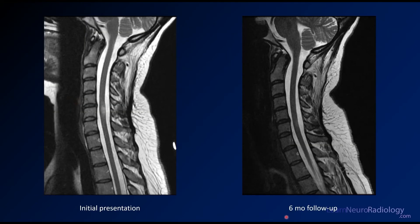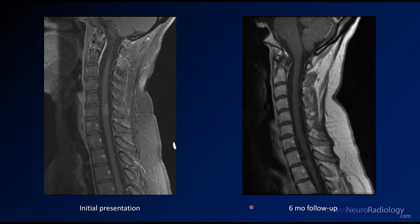After six months of treatment, you see resolution of that lesion in the cervical cord at C5-C6. The contour of the cord is back more to normal and some of that T2 hyperintensity or edema has decreased. You can see that these can get better with time and treatment. There's also resolution of the enhancement on the six-month follow-up.